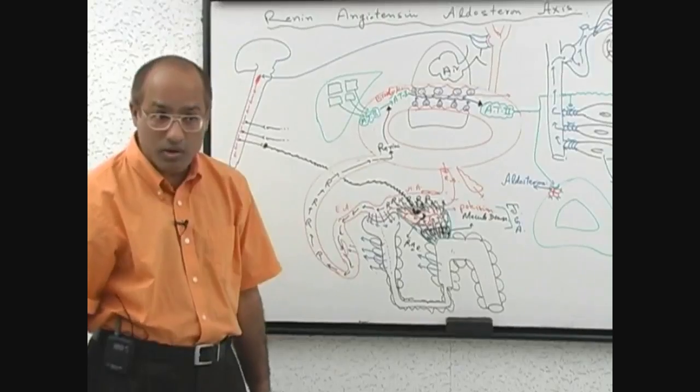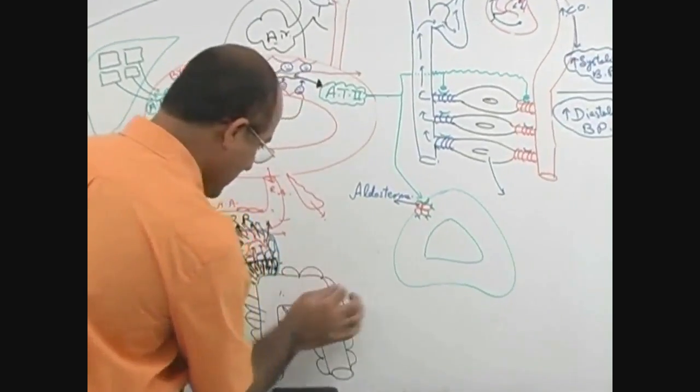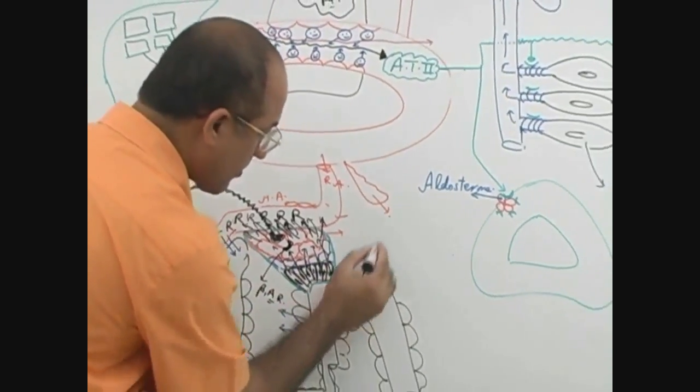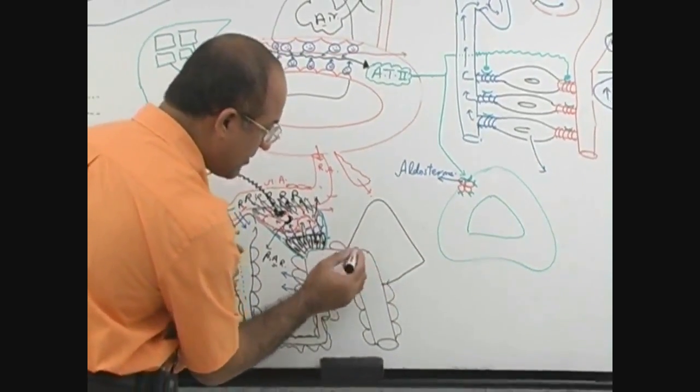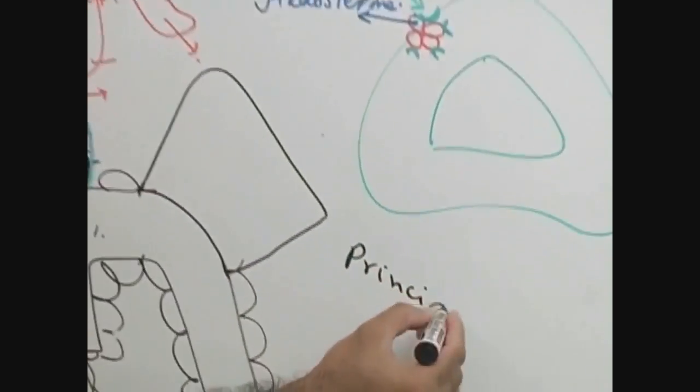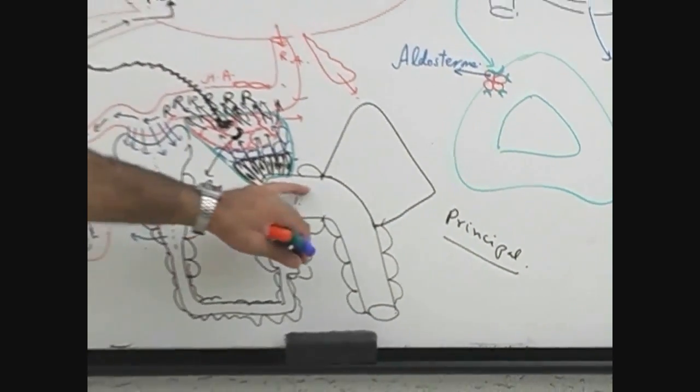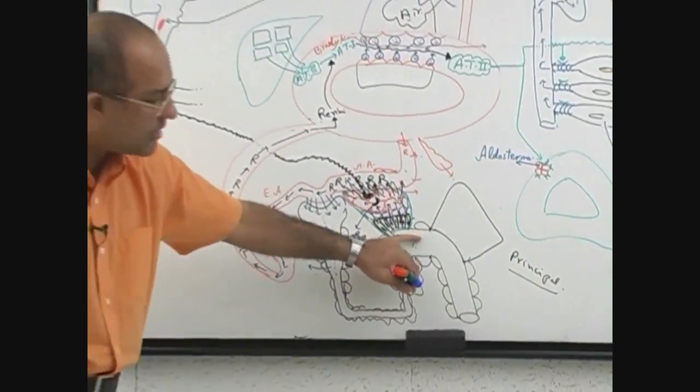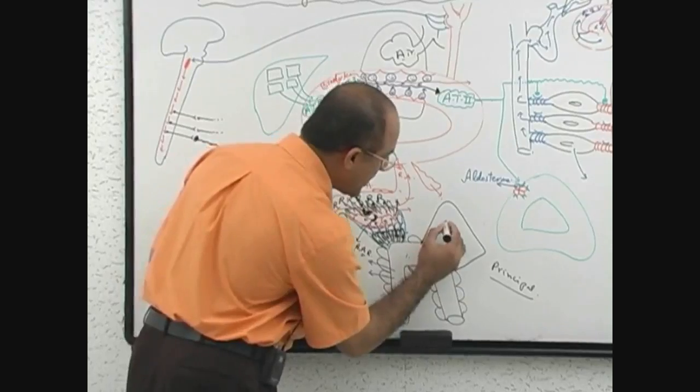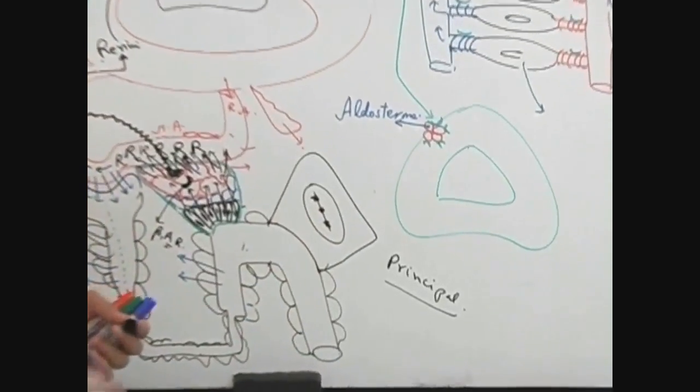What will this aldosterone do? Now let's see how aldosterone works. This is one cell I have in mind, and this cell is called a principal cell. Principal cells or P cells are in the last part of the nephron, usually in the second half of the distal convoluted tubules and in collecting tubules. This is the nucleus of the principal cell. It has different genes here.